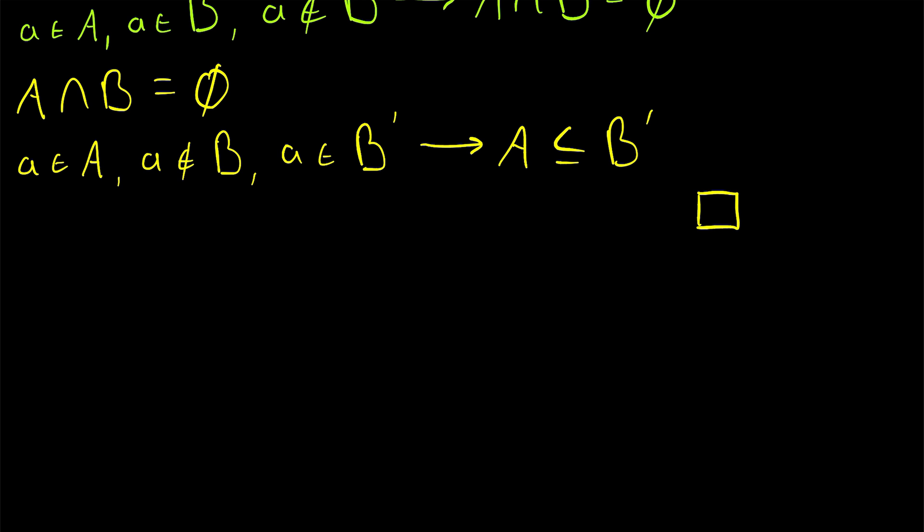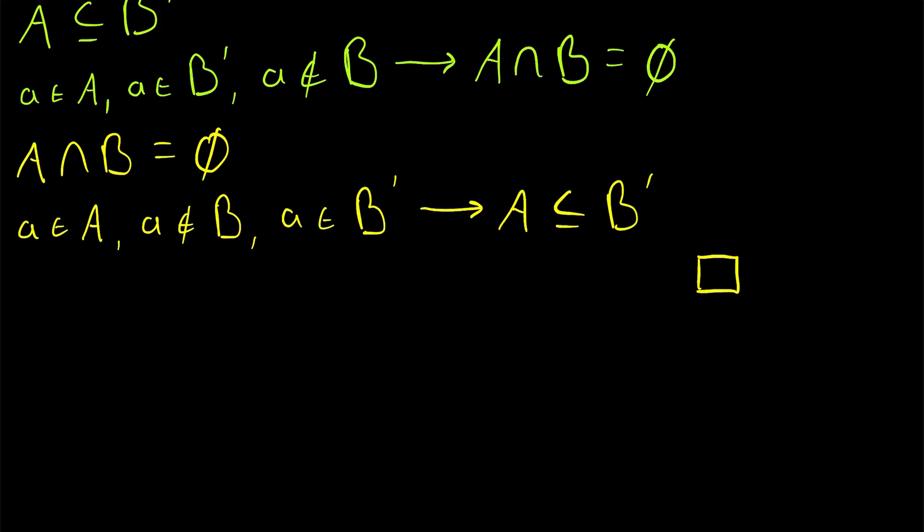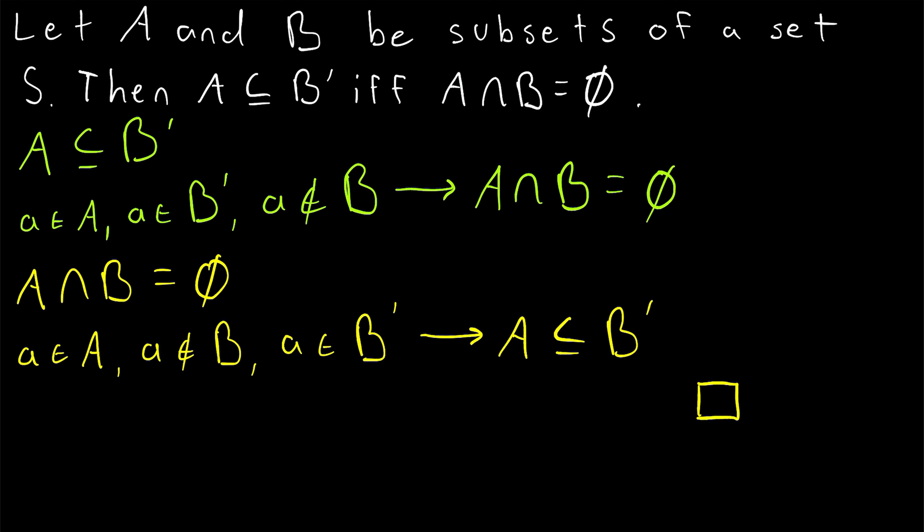And yeah, I hope this video helped you understand how to prove this basic set theory result. If A and B are subsets of a set S, then A is a subset of B complement, if and only if A intersect B is equal to the empty set.